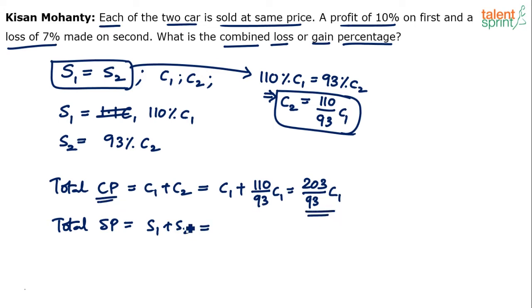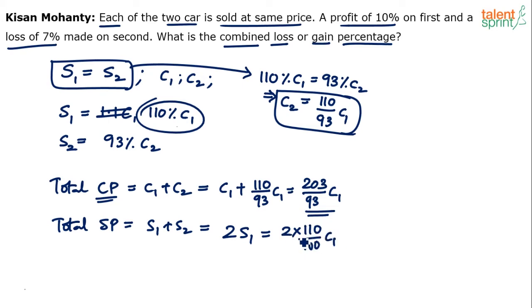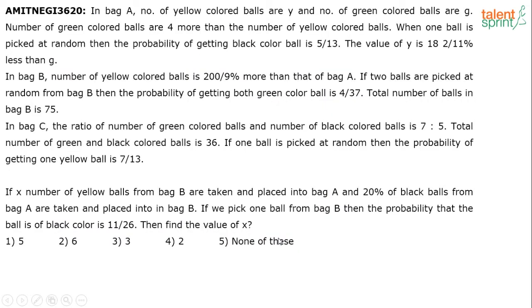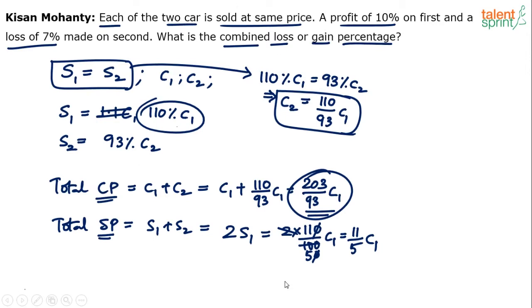What is the total selling price? S1 plus S2. But we know S1 equals S2, so this can be taken as 2S1. And S1 equals 110% of C1, which is (110/100)C1. So total selling price is 2 × (110/100)C1 = (220/100)C1 = (11/5)C1. Both cost price and selling price are now known in terms of C1.